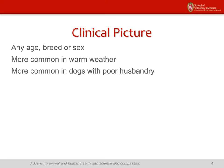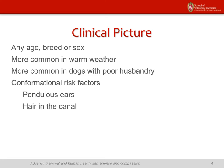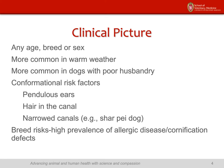Otitis is more common in dogs with poor husbandry, mainly because there's more moisture, more crowding, more infectious and contagious diseases, and less routine care. There are conformational risk factors — probably the hallmark breed for that would be the Shar-Pei, who are born with very closed and narrowed ear canals, but other breeds have problems too. Pendulous ears, hair in the ear canal, and narrowed ear canals are risk factors, as are breeds at high risk for allergic diseases or cornification defects.